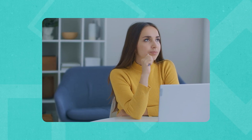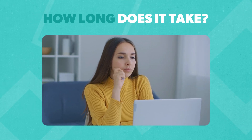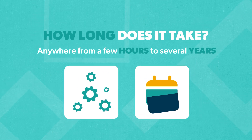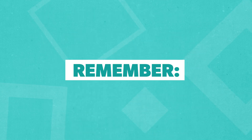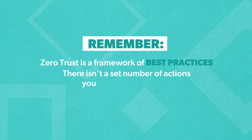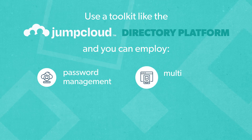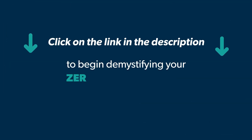At this point you may be thinking: that all sounds great, but how long does it take to get up and running with Zero Trust? The answer is anywhere from a few hours to several years. The more complex systems you have in place, the more time you will likely spend transitioning away from old security systems towards the new model. It's important to remember that Zero Trust is a framework of best practices, so there isn't a set number of actions you can take to become Zero Trust official. Use a toolkit like the JumpCloud directory platform and you can employ password management, multi-factor authentication, patch management, and conditional access policies fairly quickly. Click on the link in the description to begin demystifying your Zero Trust journey.